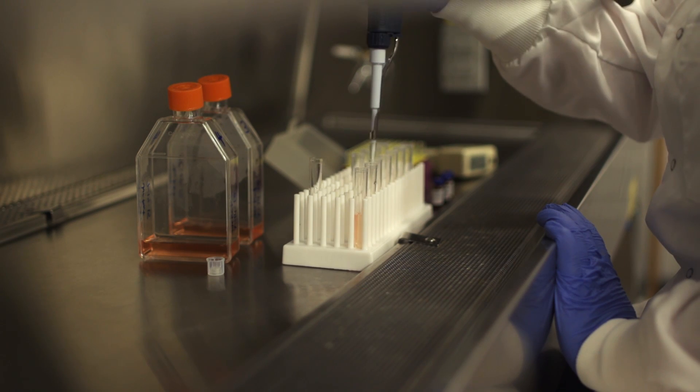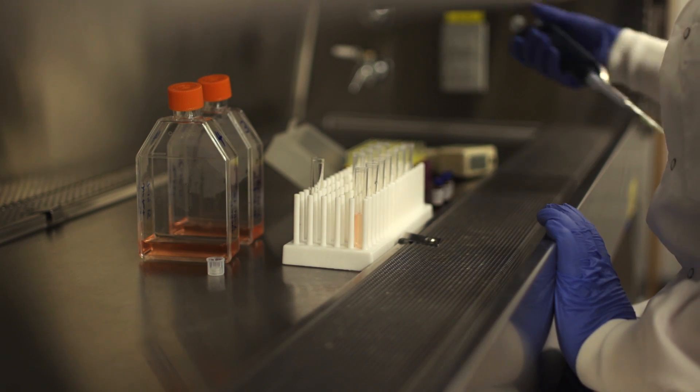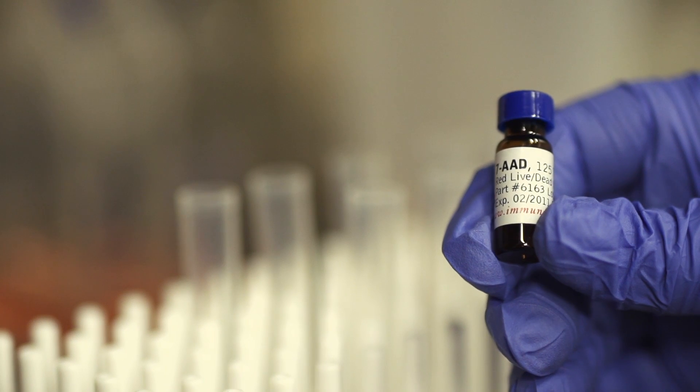If using the basic cytotoxicity kit, skip the labeling step with SR-FLICA and simply stain the cells with 7AAD. There is no need to lyse or permeabilize the cells.